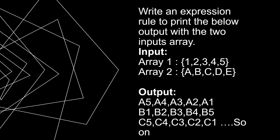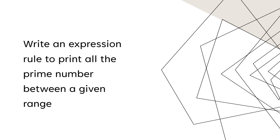Moving on to our next question: we need to write an expression rule to print all the prime numbers between a given range. Let's say the range is from 10 to 100. I think this one is pretty straightforward, so good luck to you guys.